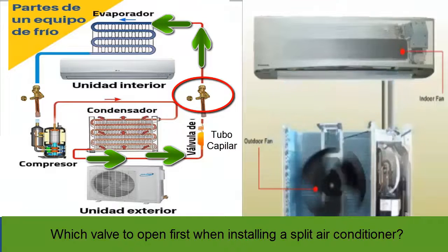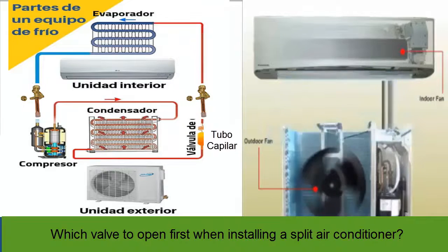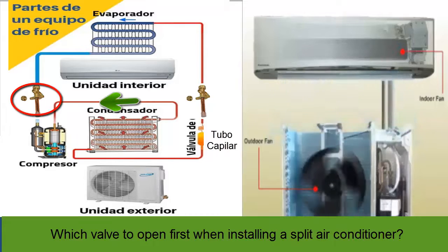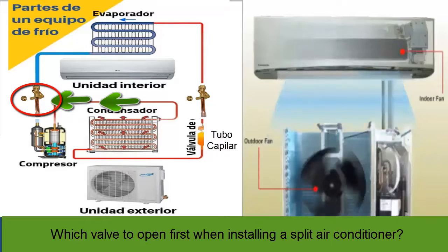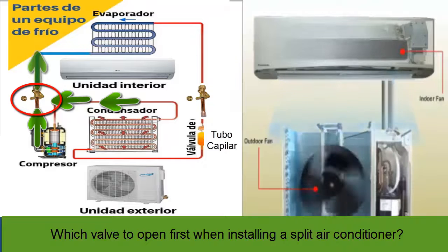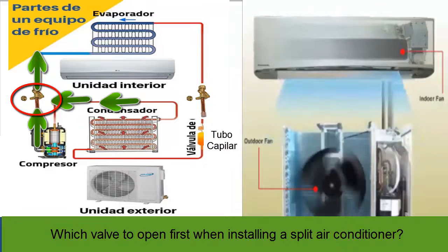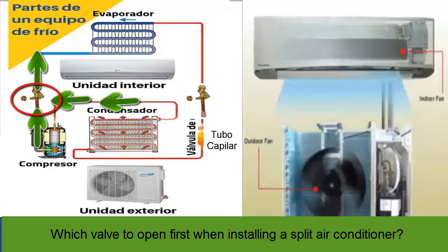In contrast, when the valve of the thicker pipe is opened first, the refrigerant may suddenly drag part of the lubricant oil located in the compressor crankcase and deposit it in the evaporator. This occurs because the exit of refrigerant through the thicker pipe or larger valve is not controlled by the capillary tube. So the best approach is to open the thin valve slowly first.